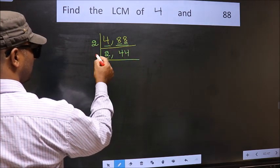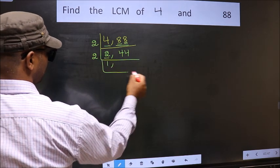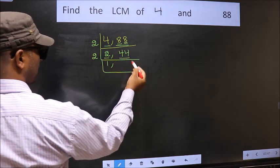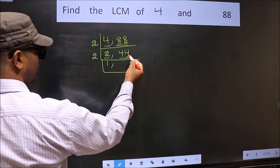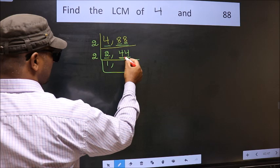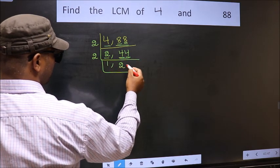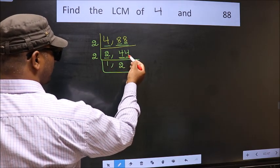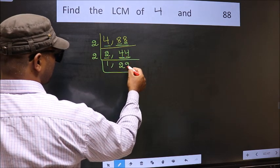Now here we have 2, 2 is a prime number. So 2, 1 is 2. The other number 44. Last digit 4 is even. So this number is divisible by 2. First number 4. When do we get 4 in 2 table? 2, 2 is 4. The other number 4. When do we get 4 in 2 table? 2, 2 is 4.